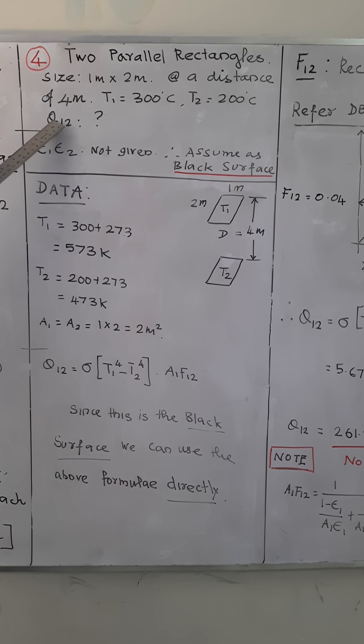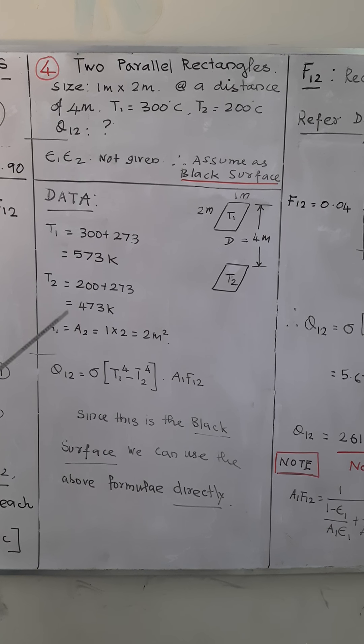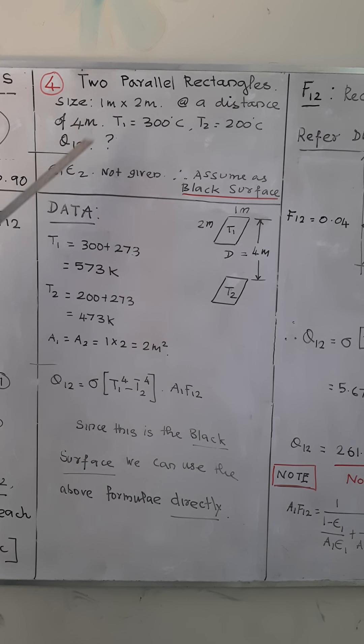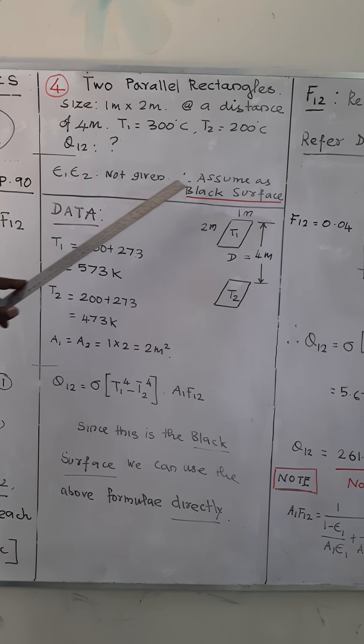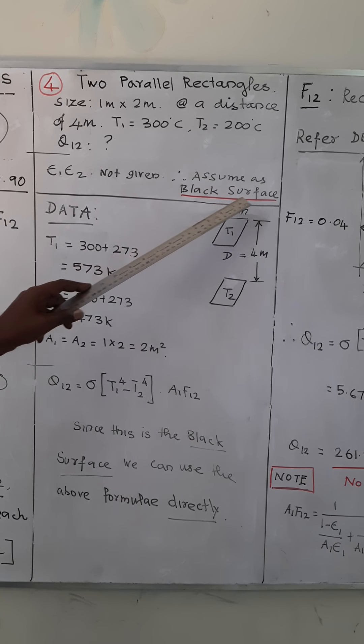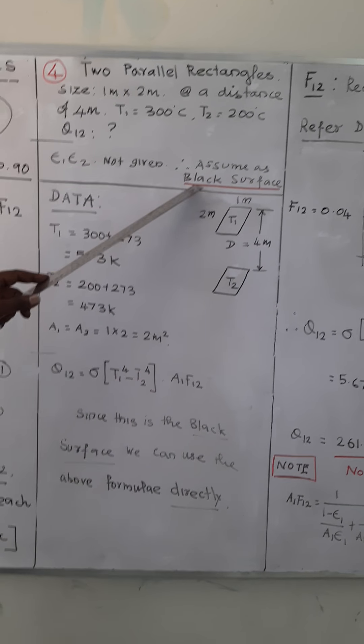Now, they didn't mention about ε₁ and ε₂, the emissivities. Not given, so you can assume this surface as the black surface. Since it is a black surface, we know the final formula.